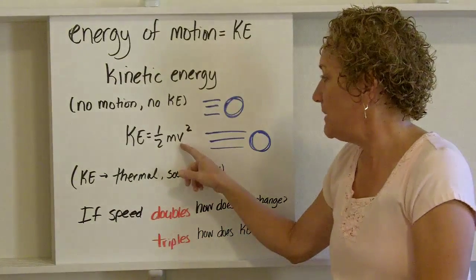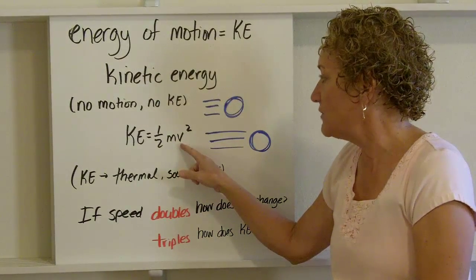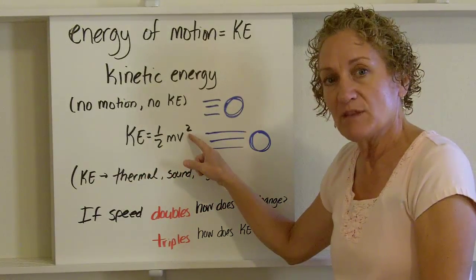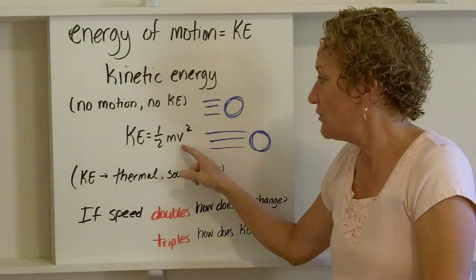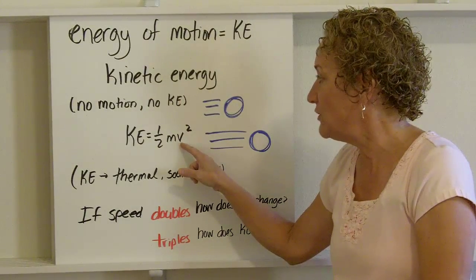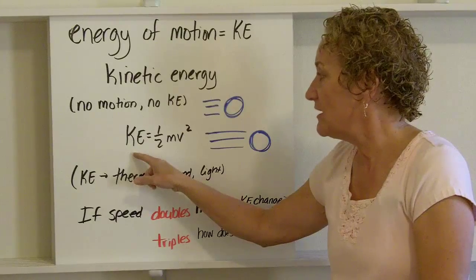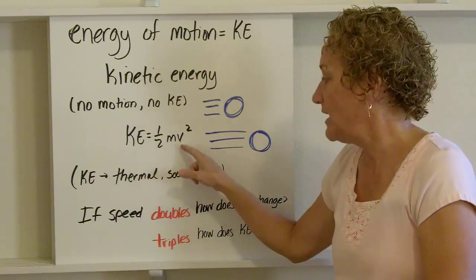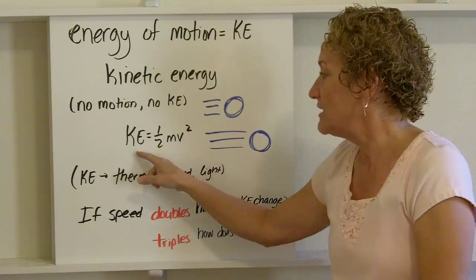So if speed doubles, if this v becomes 2 instead of 1, what happens to kinetic energy? Well, it's really important to remember that velocity is squared. So if this goes from 1 to 2, this goes up to 4. This gets quadrupled. So if this is doubled, this is quadrupled.